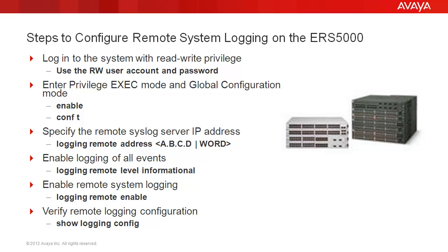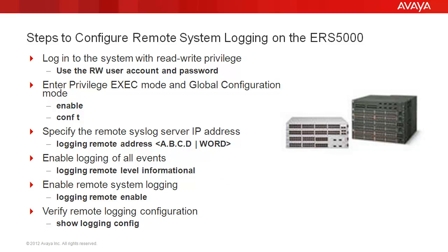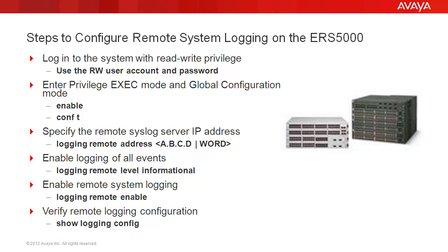To specify the remote syslog server IP address, we'll use the command logging remote address, followed by the IP address, which can be an IPv4 address or IPv6 address. The IPv6 address is a character string of up to 45 characters. We will enable logging for all events with the command logging remote level informational.